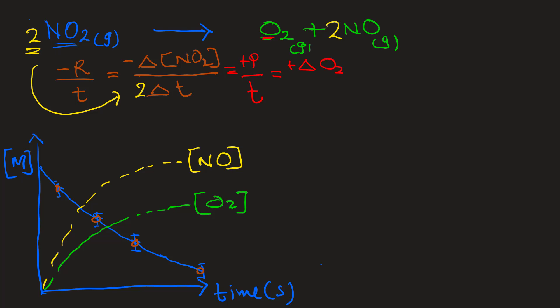And then we can write oxygen gain: plus delta O2 molarity over delta T. Coefficient is 1, so you don't need to write it. It is also equal to plus delta NO molarity, gain of product, over delta T. The coefficient 2 goes to the denominator here. That's how we write the rate.